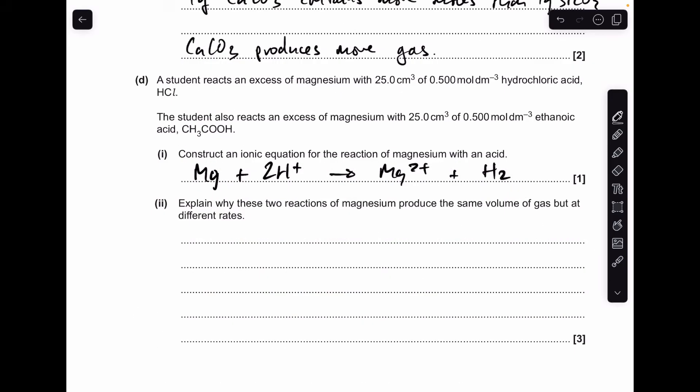Finally part D, the ion equation for magnesium with any acid. Obviously the magnesium is reacting with the H plus ions from the acid, and it's generating the Mg²⁺ ion and hydrogen.